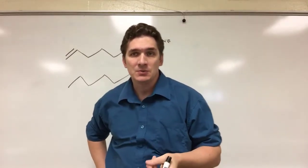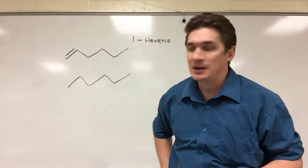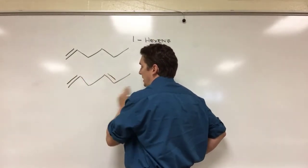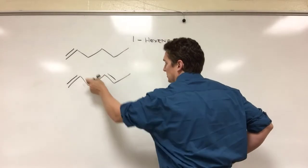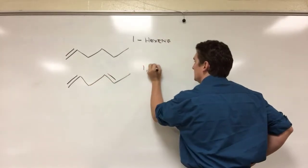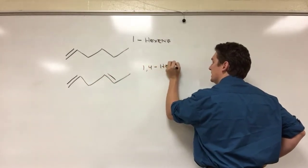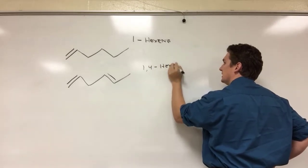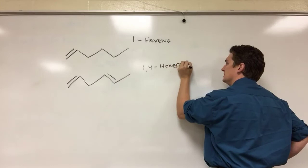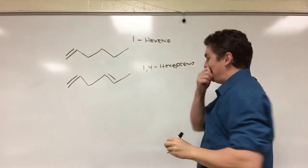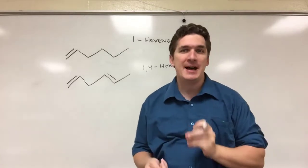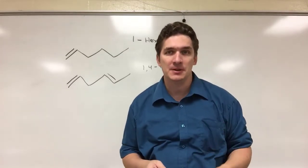But let's say we have two double bonds. Well there's a couple of ways that we can describe where this double bond goes. So let's say we have 1,4-hexadiene. Now a few comments on this. The hexa here naming the parent chain as you expect. The di here is going to refer to the fact that we have two double bonds.